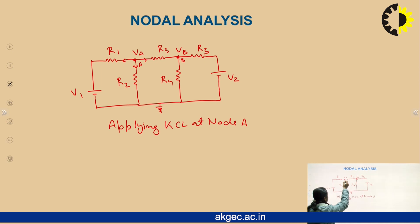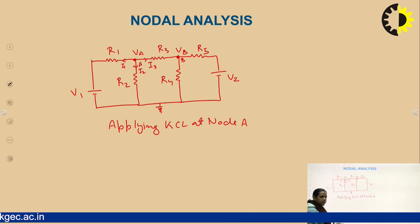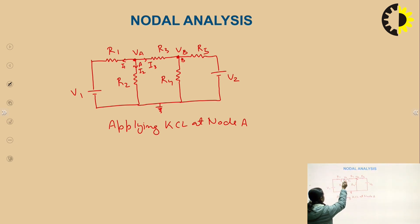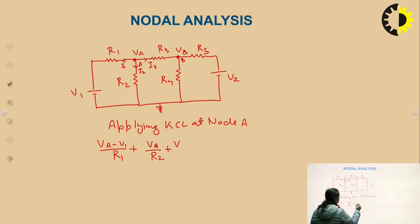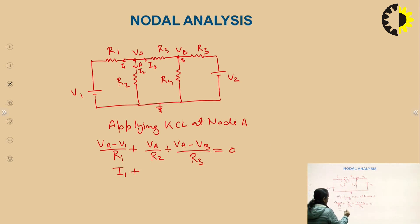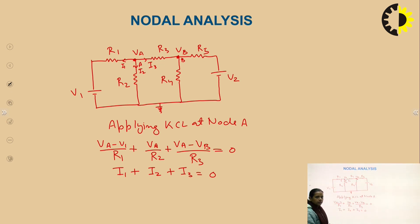Suppose the current in this branch is I1, this is I2, and this is I3. The sum of all these currents should equal zero. We write: (VA − V1)/R1 + VA/R2 + (VA − VB)/R3 = 0. This gives I1, I2, and I3 respectively, and the sum of all these currents equals zero as per KCL.